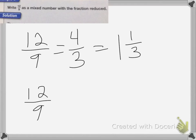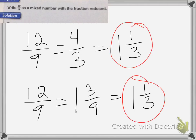If I convert first, my 12 ninths will equal 1 and 3 ninths, which then I would have to reduce 3 ninths to equal 1 and 1 third. The answer is the same either way, just sometimes it's easier to reduce first.